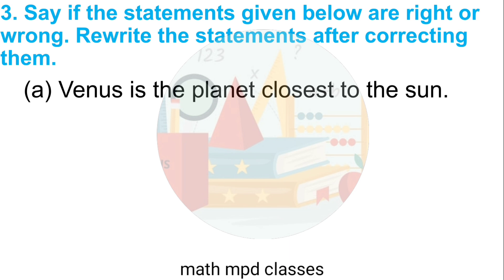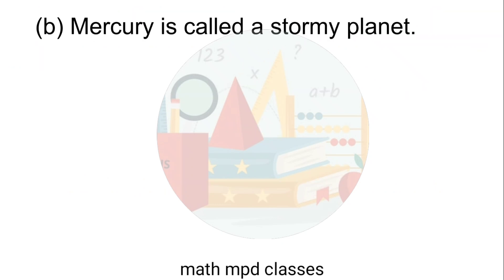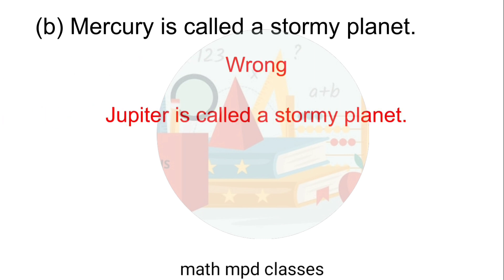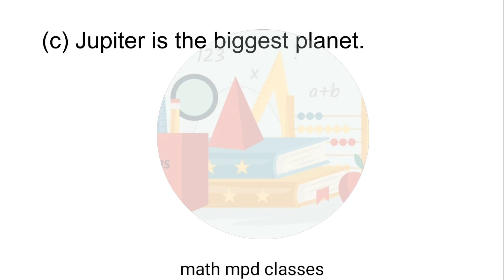Question No. 3. Say if the statements are right or wrong and rewrite after correcting them. A. Venus is the planet closest to the sun — This is wrong. Mercury is the planet closest to the sun. B. Mercury is called a stormy planet — This is wrong. Jupiter is called a stormy planet. C. Jupiter is the biggest planet — This statement is right.